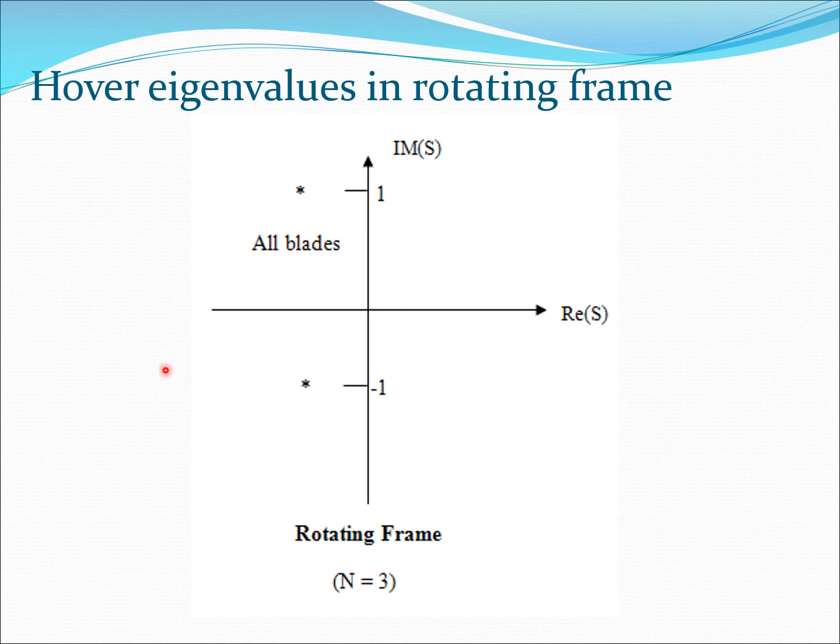Let us look at the hover case rotating frame. Here we have plotted the real part and the imaginary part. For example, these all would be here and here, on the plus and minus side. This diagram is not to scale but just to express the fact that all these roots are co-located. They are located at the same place. And of course this is well damped, well into the left-hand side of the equation. That means the real part of S is negative, so it's a well-damped system.